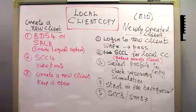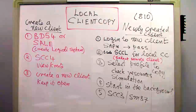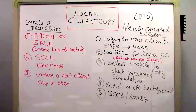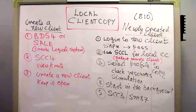SCC4 allows me to change the source client. Since I am doing a local client copy, I can only select an existing client in my system, such as client 800 or 000. Client copy usually takes a lot of time, so before starting I decide what to copy into the target. If I select the profile SAP_ALL, it will copy everything from the source to the target. Alternatively, I can copy only user and authorization information.